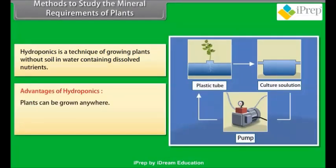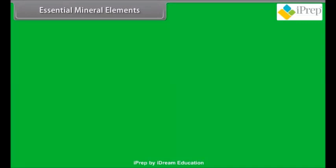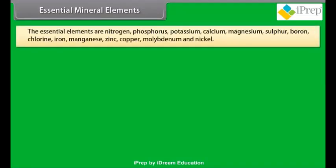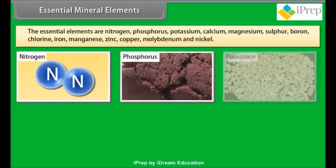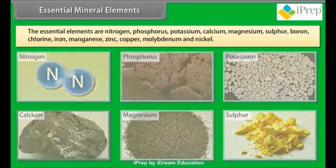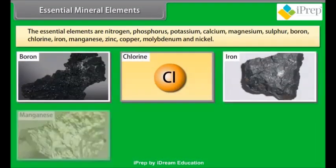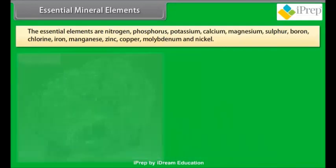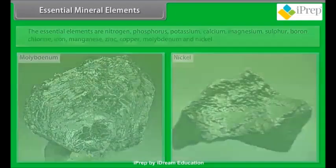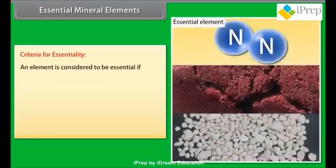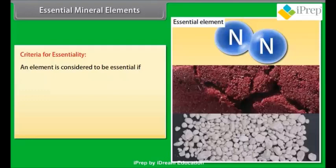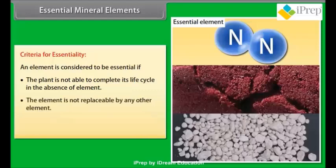Advantages of hydroponics: plants can be grown anywhere; controlled plant growth; and water and nutrients are conserved. Essential mineral elements are those that are not replaceable — a plant cannot complete its life cycle in the absence of the element, the element cannot be replaced by any other element, and the element is directly involved in the metabolism of the plant.